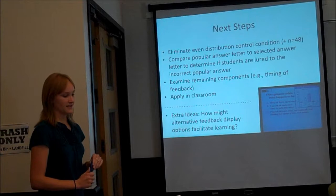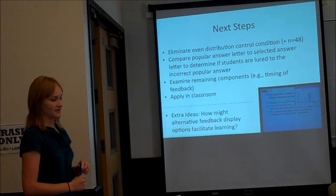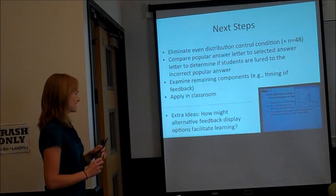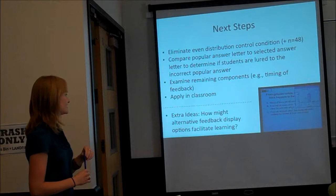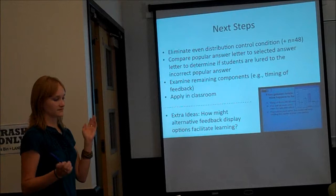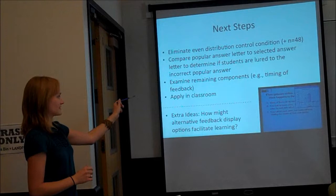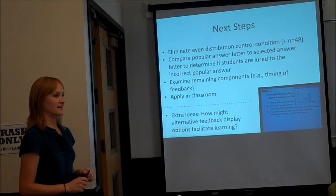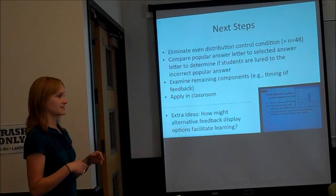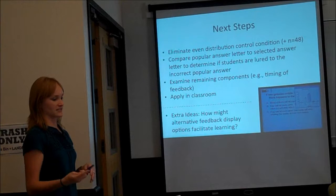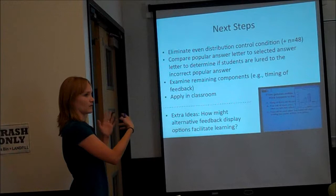In conclusion, our results are leaning towards supporting the salience hypothesis—the salience of an incorrect answer, or the lack of salience of the actual correct answer, may be potentially detrimental to learning. When the majority of the class selects a particular wrong answer, maybe err on the side of safety and don't show the distribution—just give corrective feedback. We want to eliminate that even distribution condition to see if the effects are magnified and become statistically significant. We're also going to look next at the timing of feedback relative to when they got the questions, and then apply positive findings in the classroom. Other ideas include alternative display options, since the graph currently overlaps the question and half the answer choices.